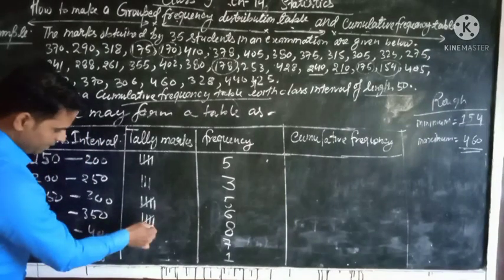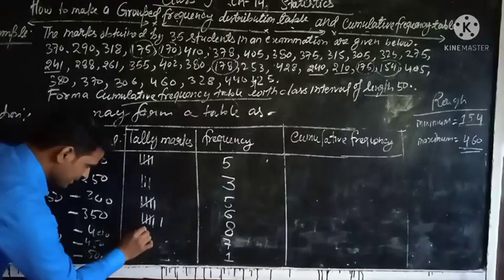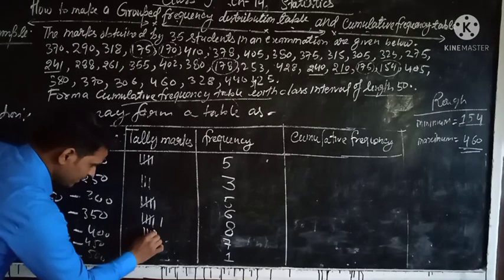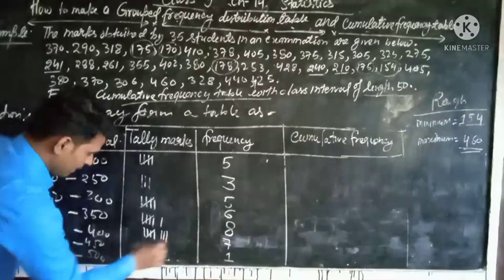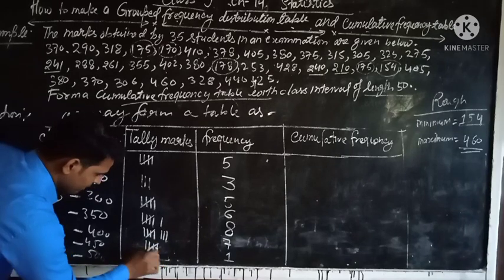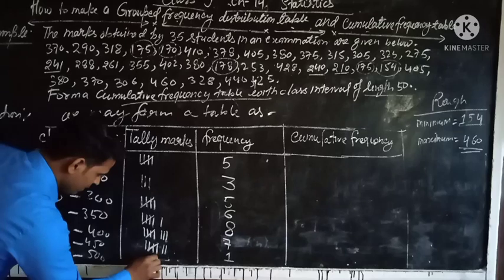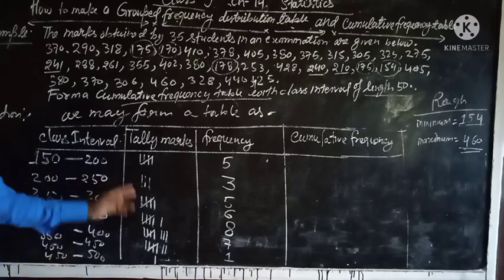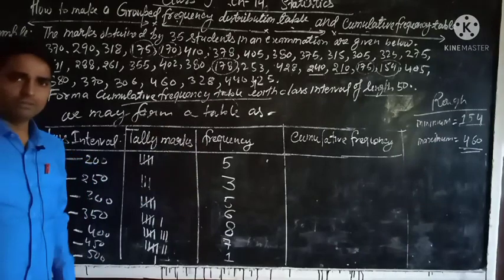And then for 8: 1, 2, 3, 4, 5, 6, 7, 8. And for 7: 1, 2, 3, 4, 5, 6, 7. And for 4, you draw only 1 vertical line. So this is the tally cross for the frequency, which is below.